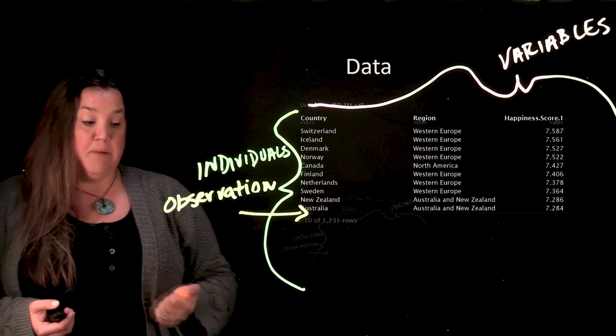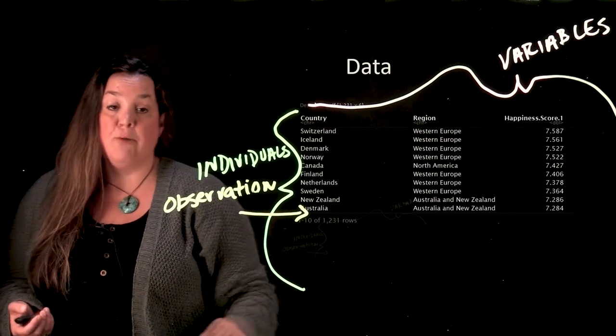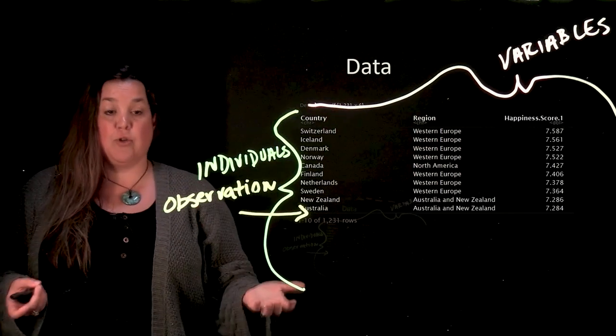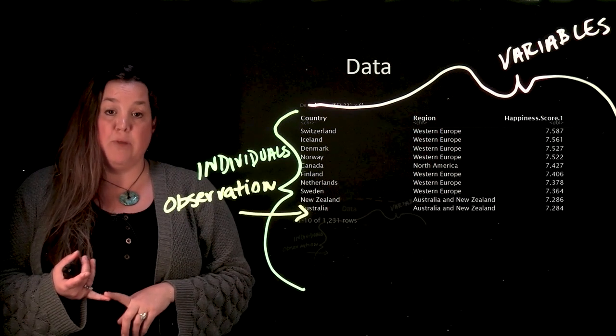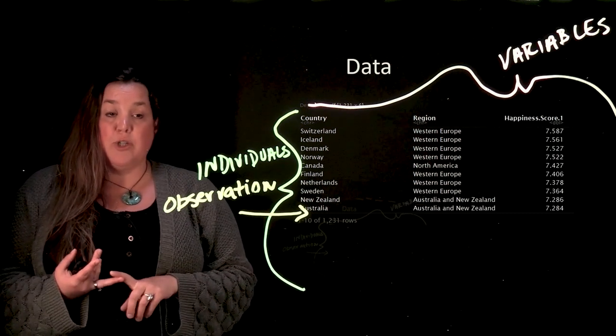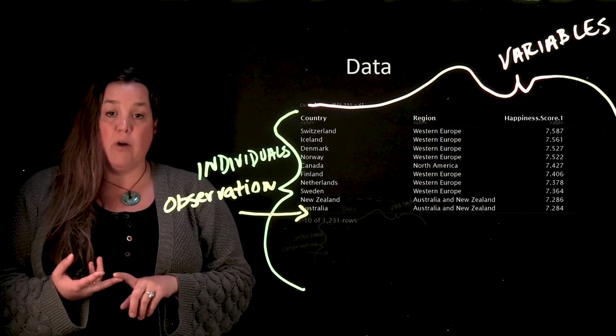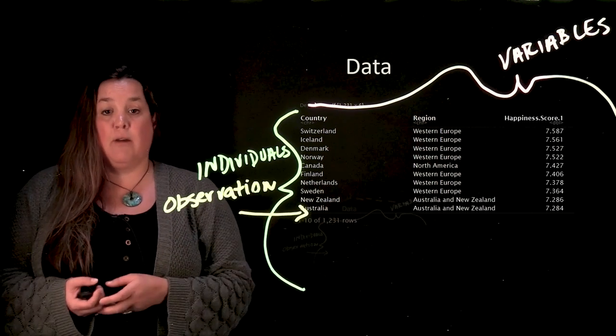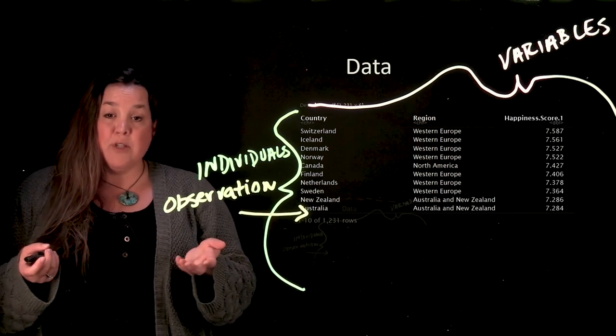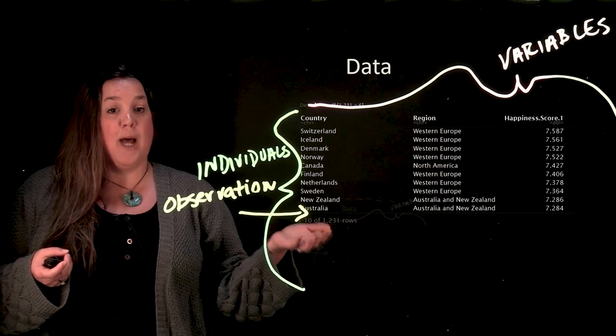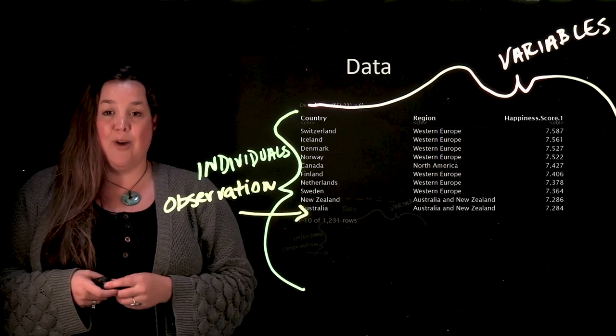So that's how you set up a data set. Those are some basic terms that we can talk about when we're describing a data set. Individuals is the group that you're interested in, observation is a single row, and then the variables are going to be represented in the columns. Thank you for coming to look at this information on data and raw data, and I'll see you in the next video.